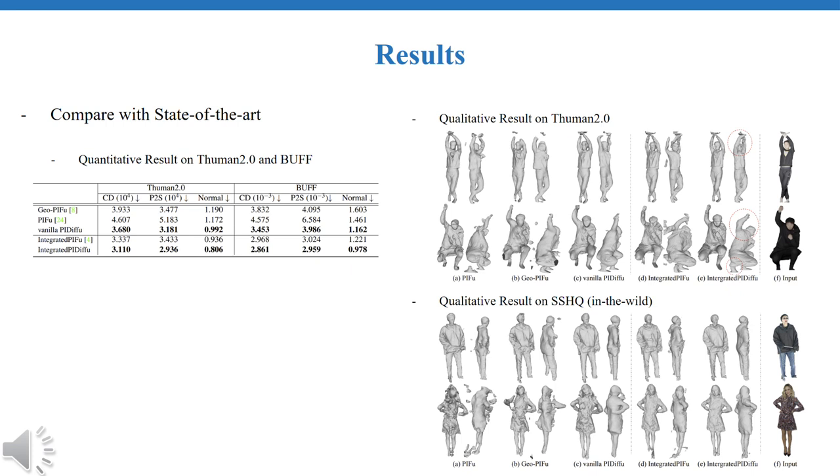Our experiments were performed using three datasets: THuman2, BUFF, and SSHQ. SSHQ was used for qualitative insight due to its lack of 3D ground truth models. In both scenarios, PIDFU outperformed the baselines.